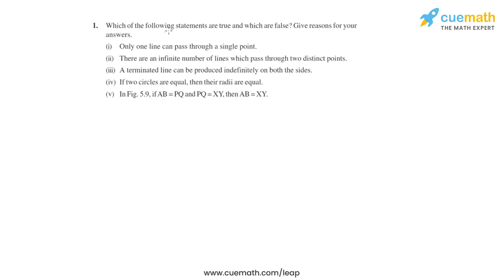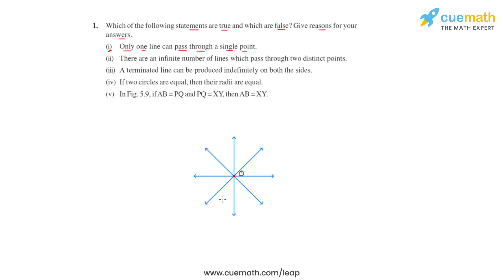Question number one of this exercise says which of the following statements are true and which are false, and we have to give reasons for our answers. Statement one says that only one line can pass through a single point. Looking at the figure on the board, taking point O, we can see there are more than one line that can pass through it. In fact, we can draw an infinite number of lines passing through point O, so statement one is false.